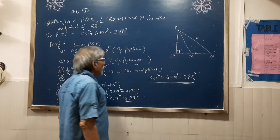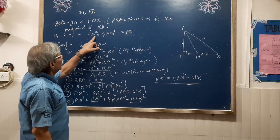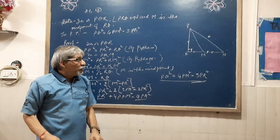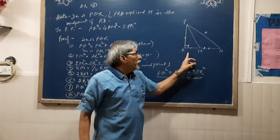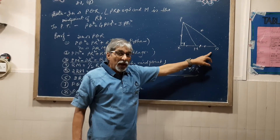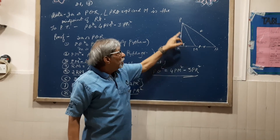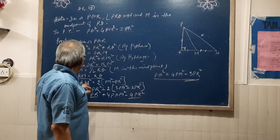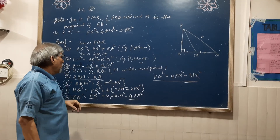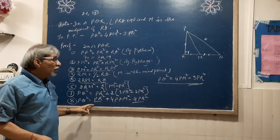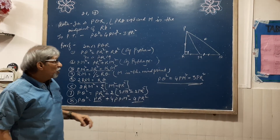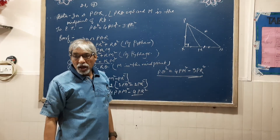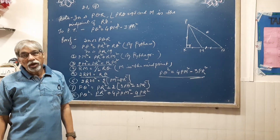This was what was to be proved. For a quick recap: first, we took the bigger triangle PRQ and applied Pythagoras theorem to get PQ squared equals PR squared plus RQ squared. Then we took the smaller triangle PRM, again applied Pythagoras theorem to get PM squared equals PR squared plus RM squared, found the value of RM squared, and by transitive property and simplification, we got PQ squared equals 4PM squared minus 3PR squared. Hence proved. I hope it's clear to you. See you in the next video.